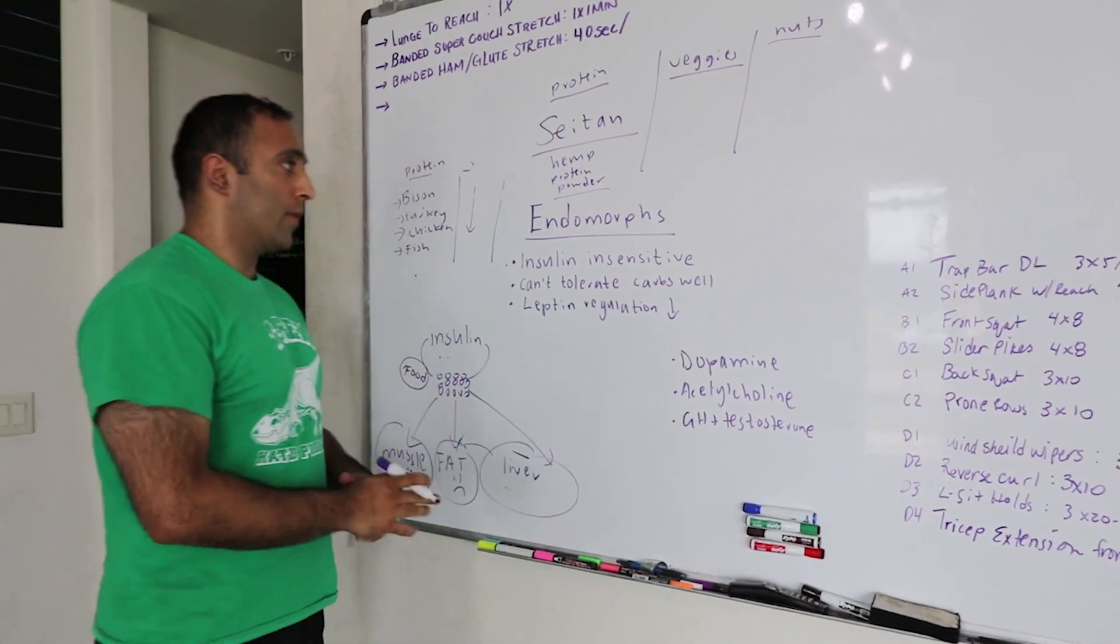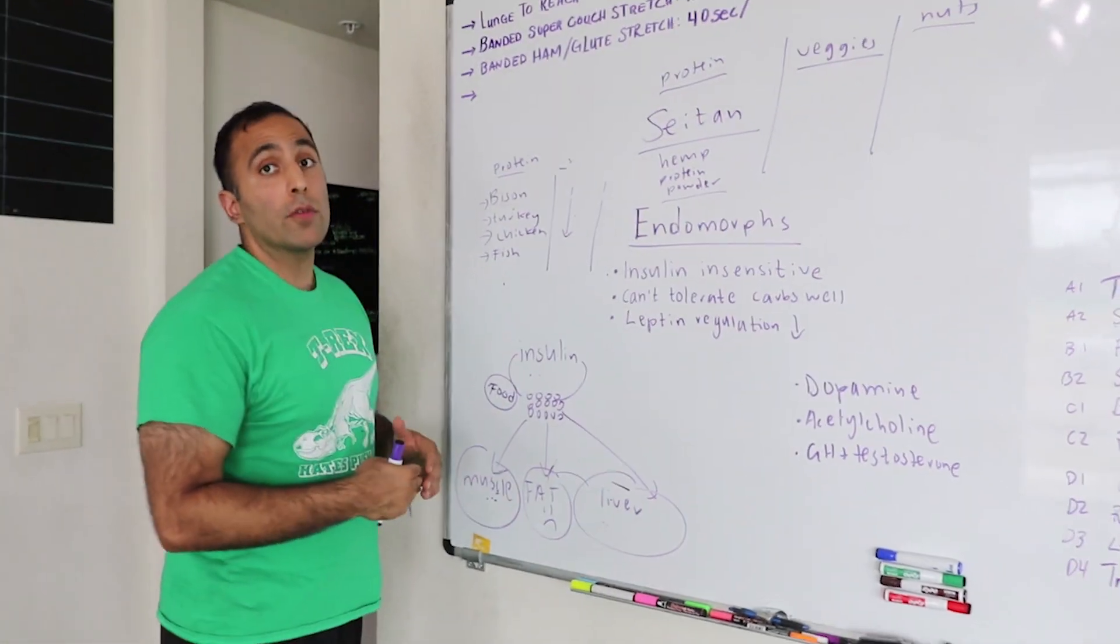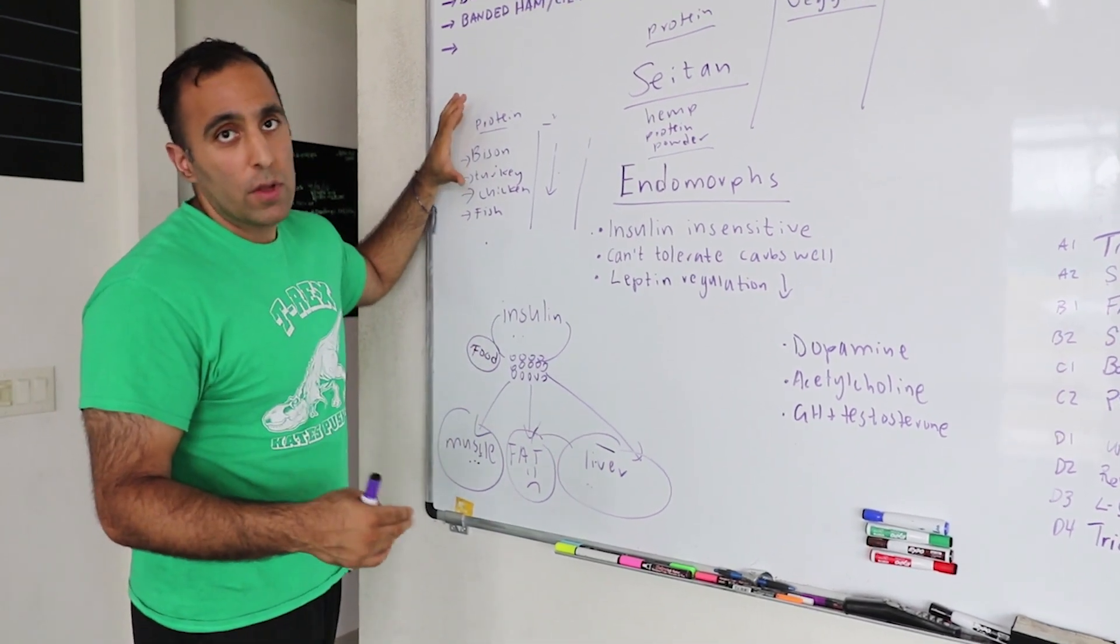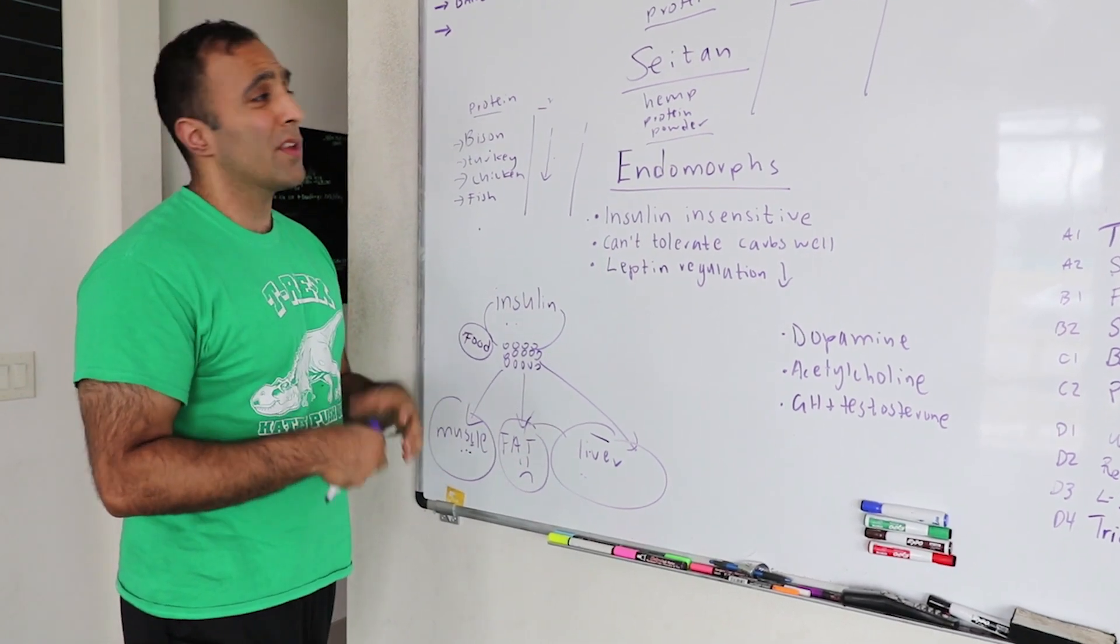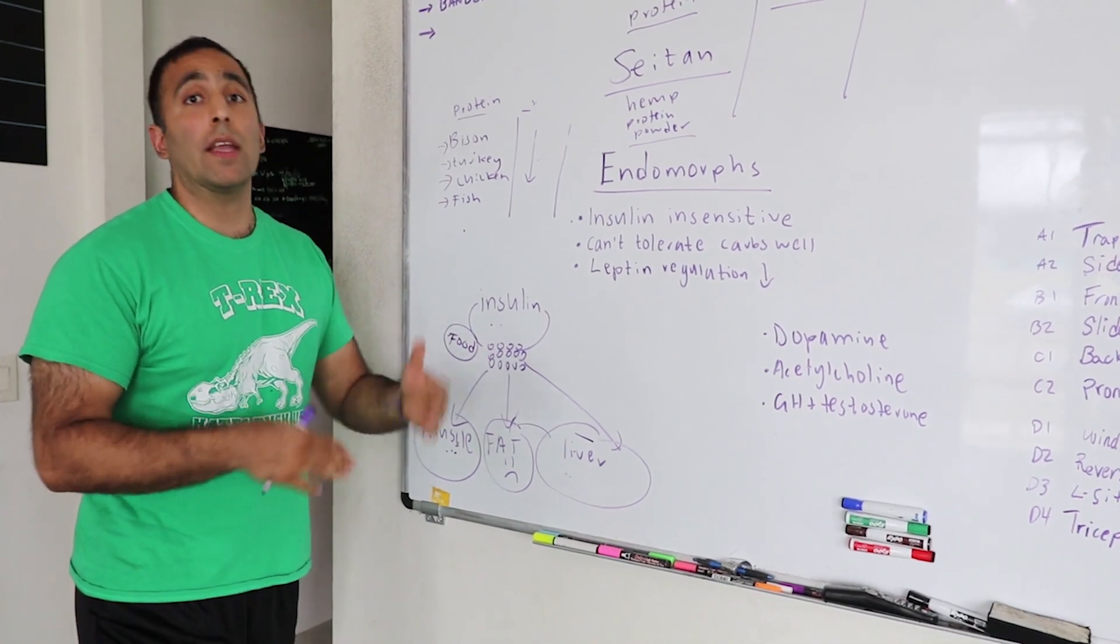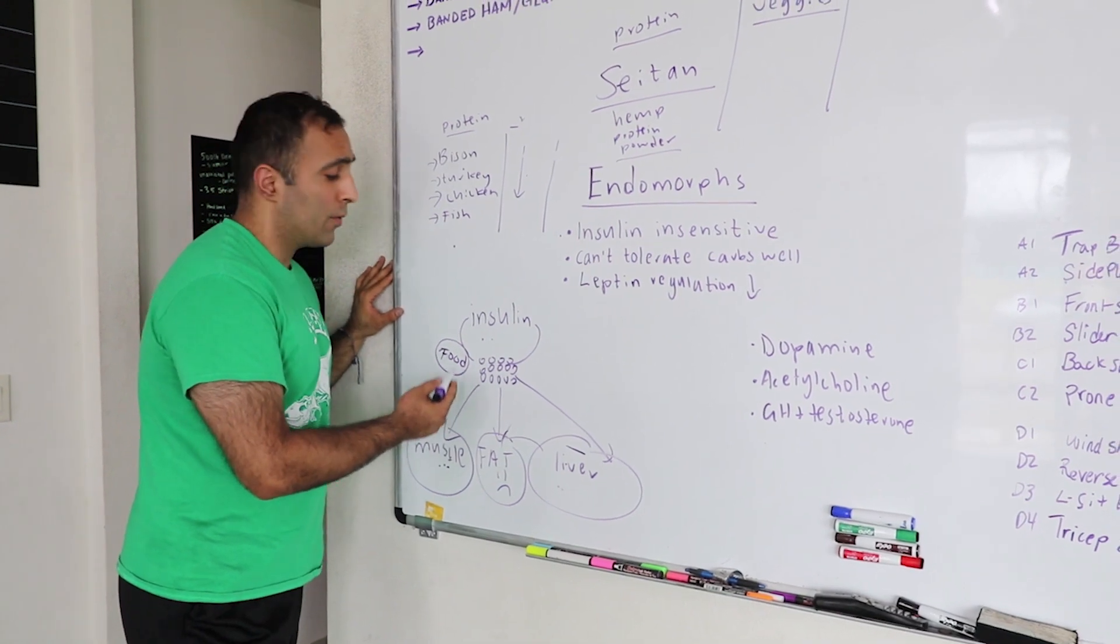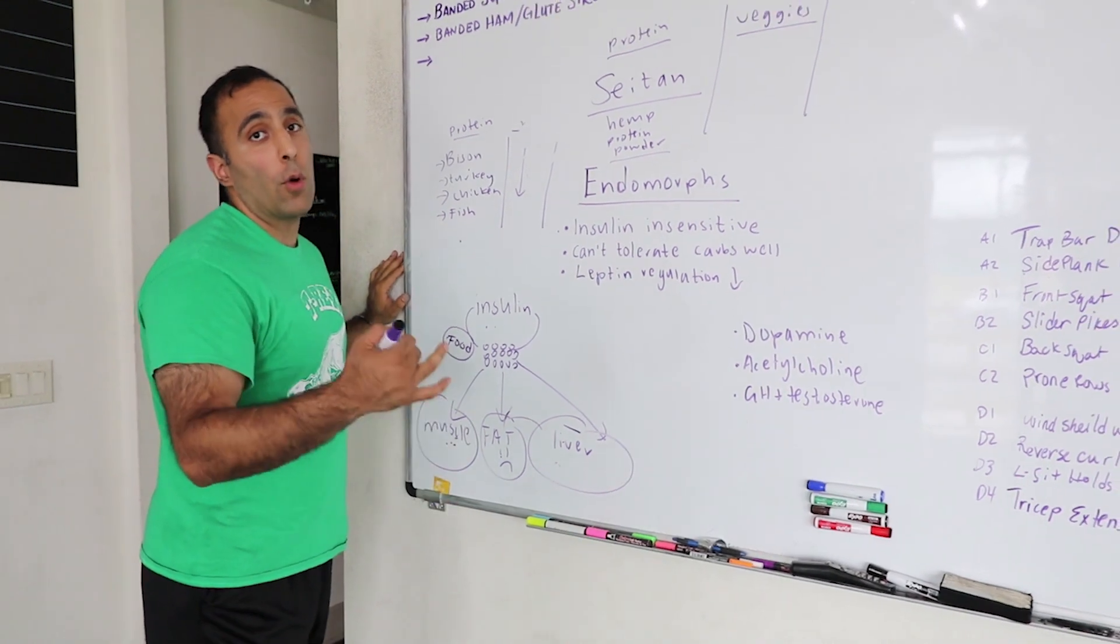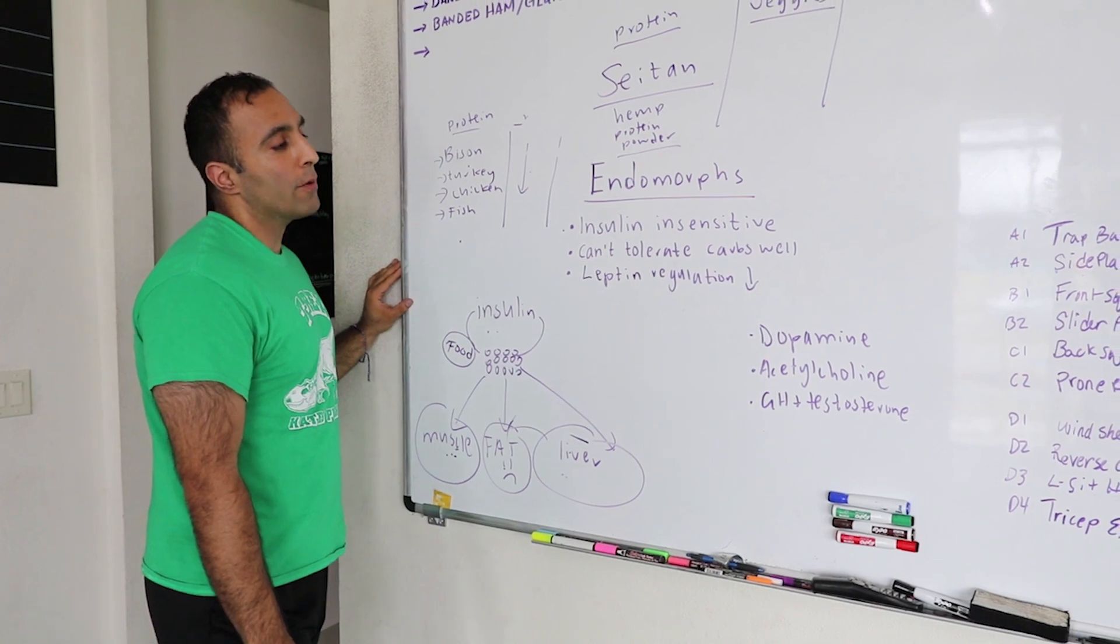Again, if you're an endomorph, whether you're a vegan, vegetarian, or a meat eater, try to make most of your breakfast comprised of protein, vegetables, and fat, and pretty low on the carbohydrates. If you absolutely have to do carbs, do low glycemic fruit like berries. Try to stay away from rice and grain and cereal that's going to make you spike up your insulin, and then inevitably you're going to store food as fat because your tissues are not as sensitive to insulin as the ectomorph or the mesomorph.